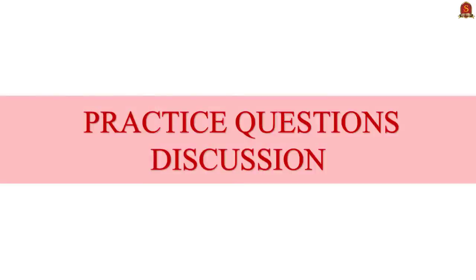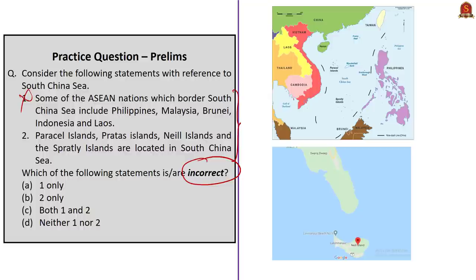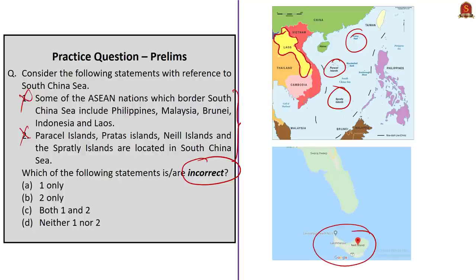Let us begin the practice questions discussion. Question one: consider the following statements with reference to the South China Sea and identify incorrect statements. Statement one says Asian nations bordering the South China Sea include Philippines, Malaysia, Brunei, Indonesia, and Laos — this is incorrect since Laos is a landlocked country surrounded by China, Vietnam, Cambodia, and Thailand. Statement two says Paracel Islands, Pratas Islands, Neel Islands, and Spratly Islands are located in the South China Sea — this is also incorrect since Neel Island is part of the Andaman and Nicobar Islands. Therefore, the correct answer is option C: both one and two.